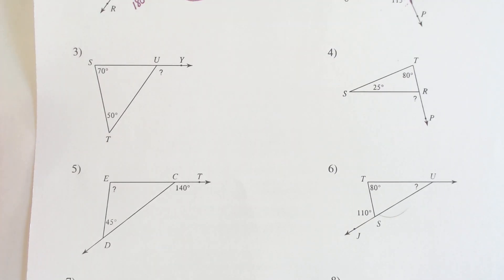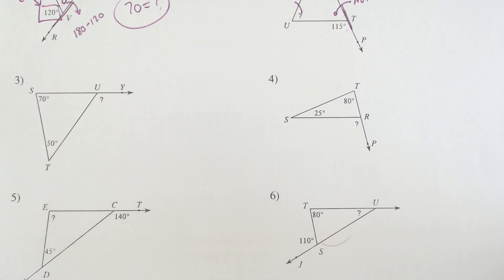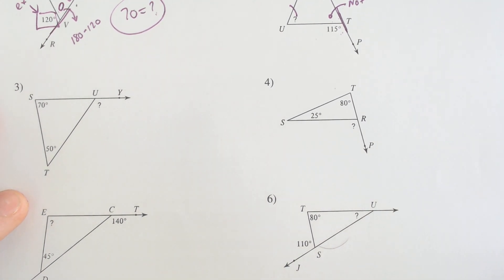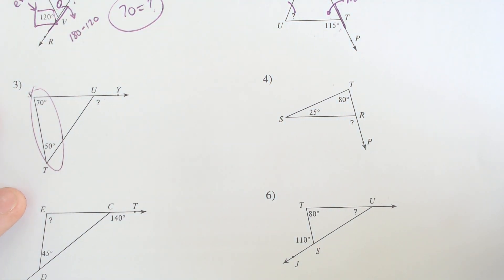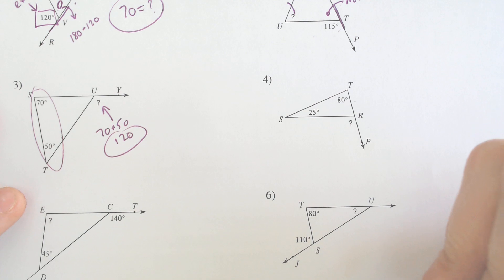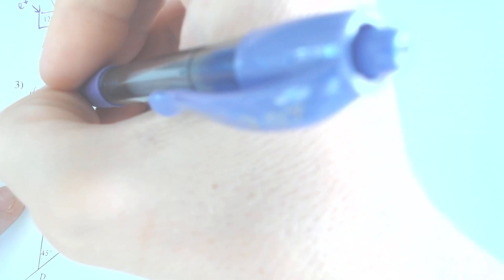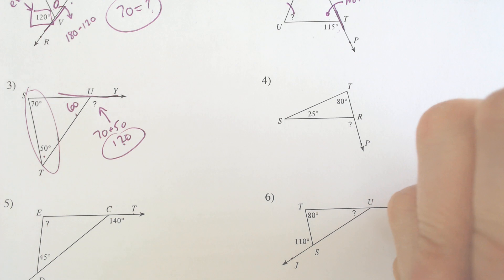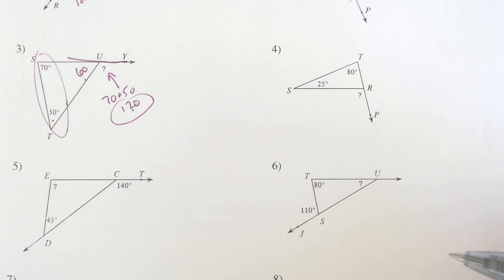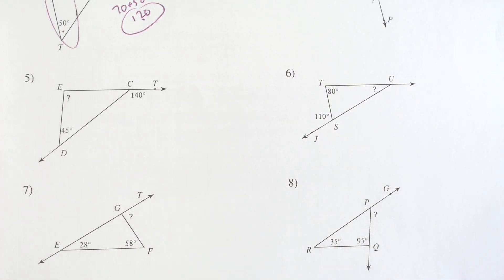So most of the time the exterior angle theorem is going to just speed things up. It is never actually necessary, but it will speed things up. Right here we know that those are the two interior angles, they must add to equal this singular exterior angle. So if we add 70 and 50 together we get 120 for that angle. Let's make sure it actually is. If this is 120, then this angle right here would have to be 60 to add to 180.